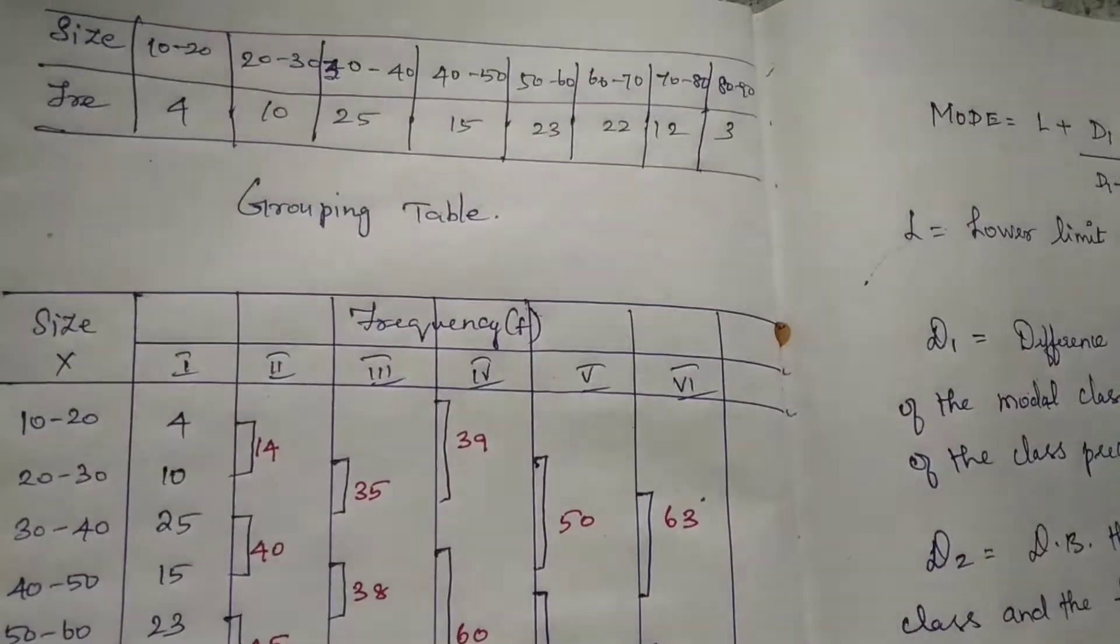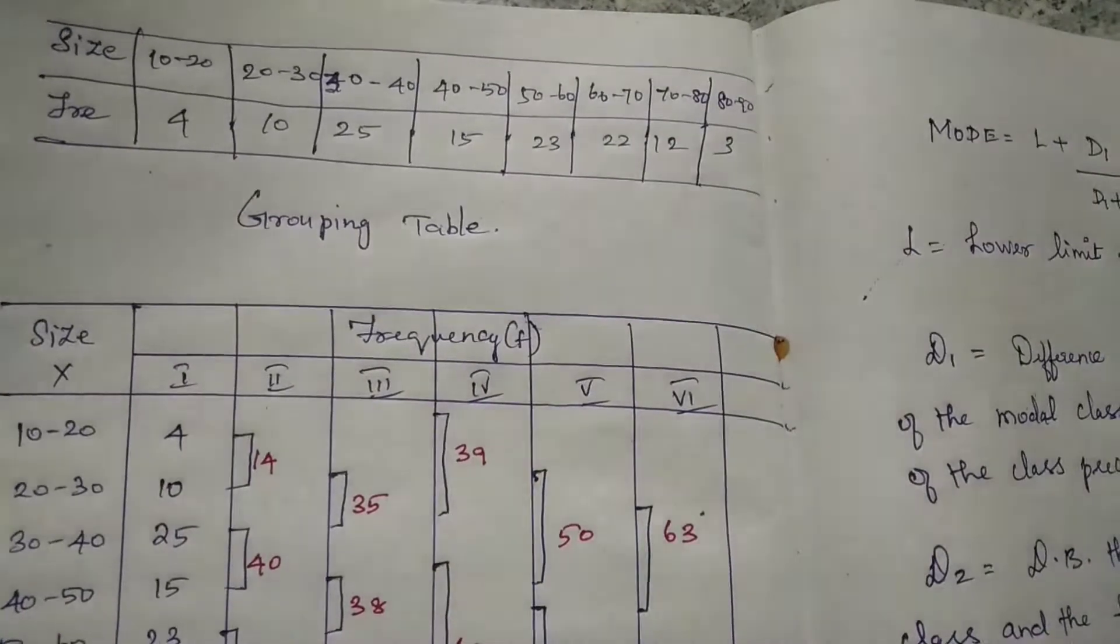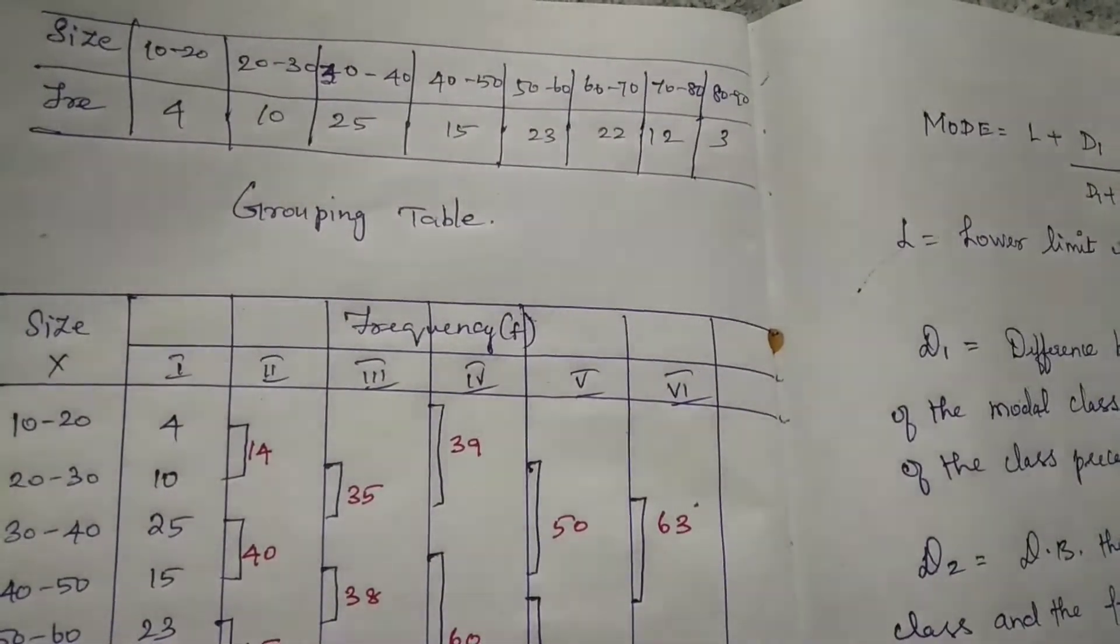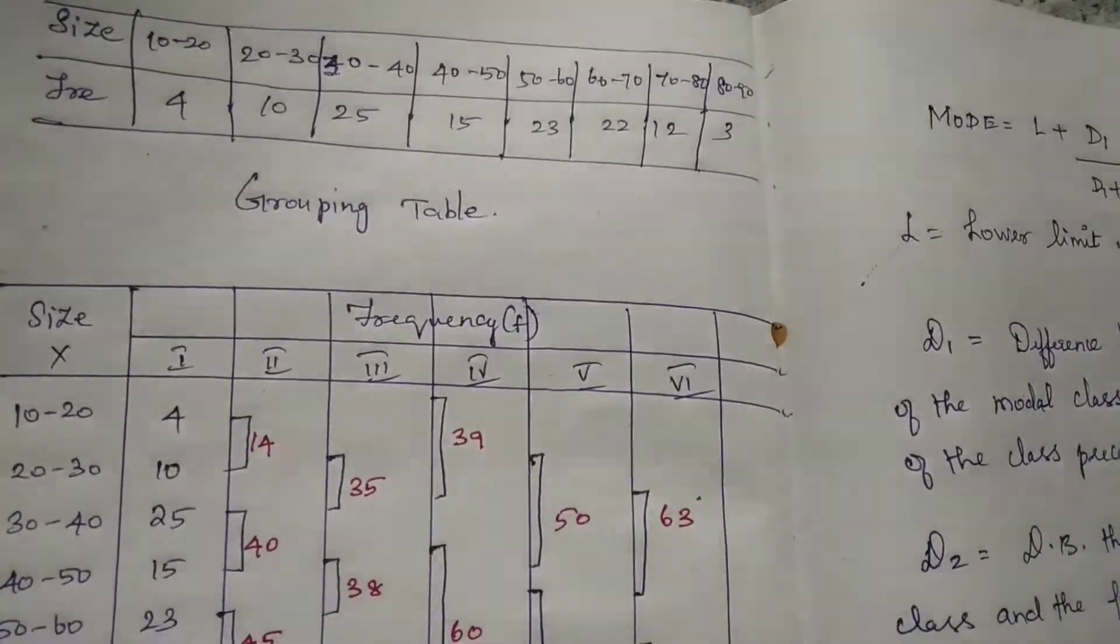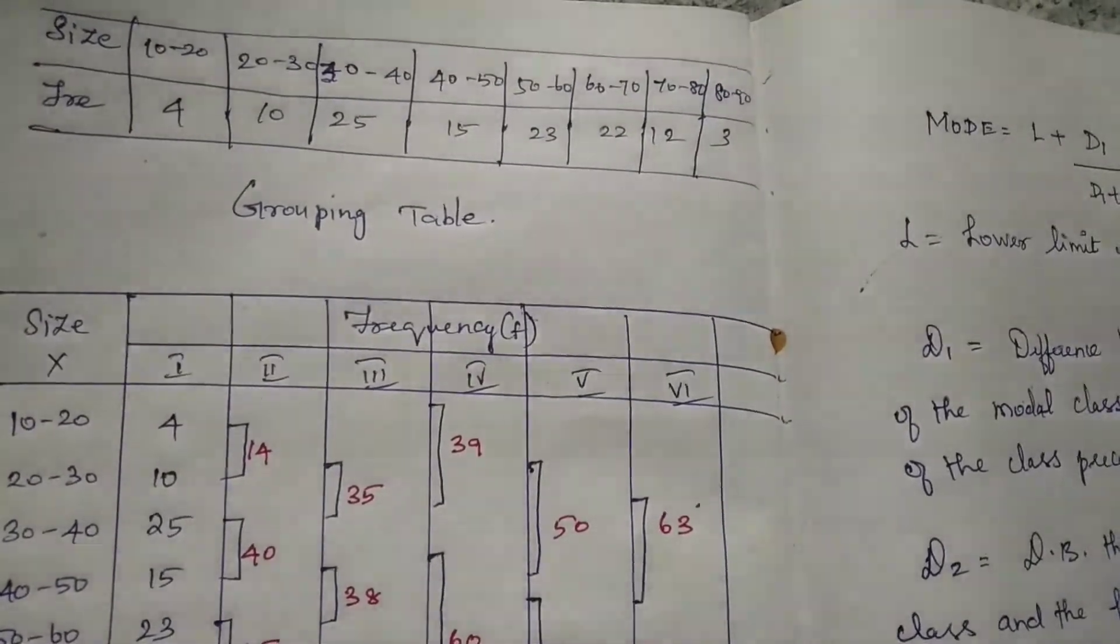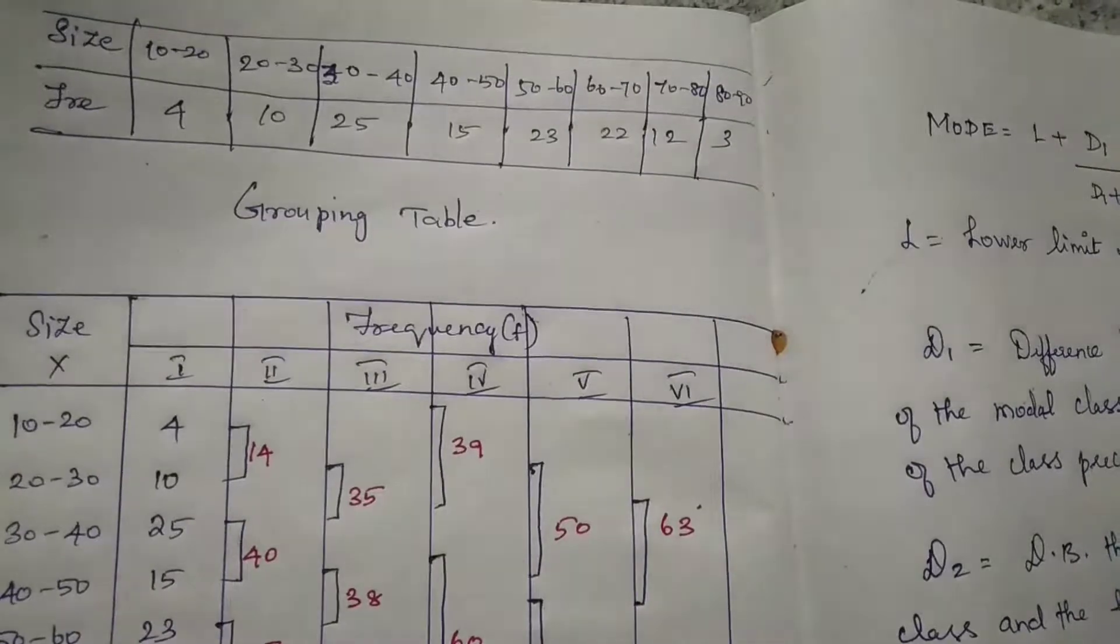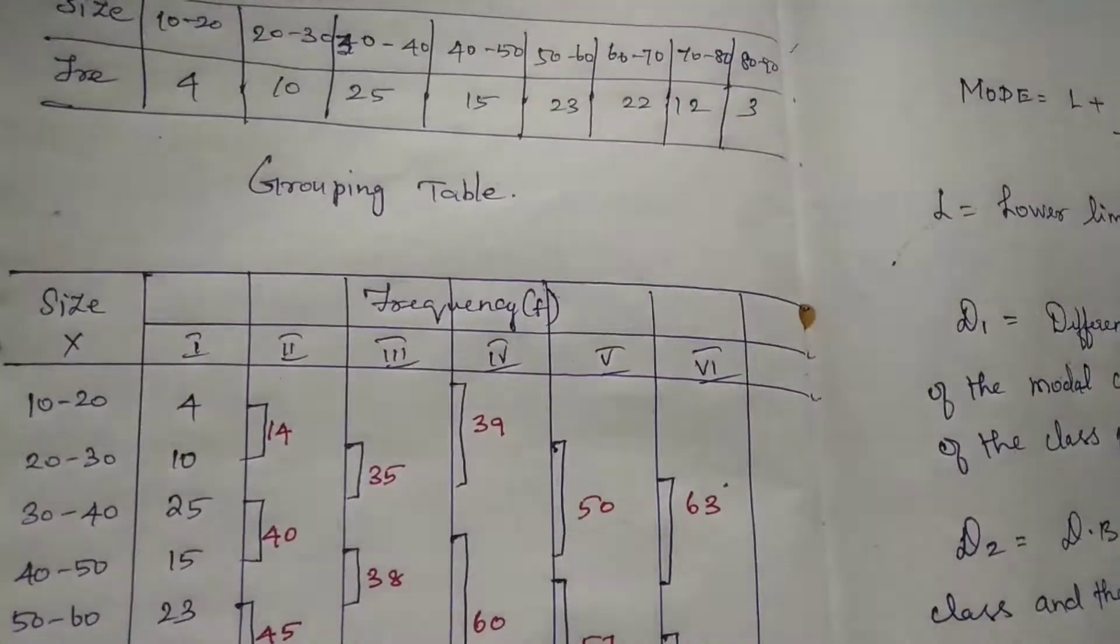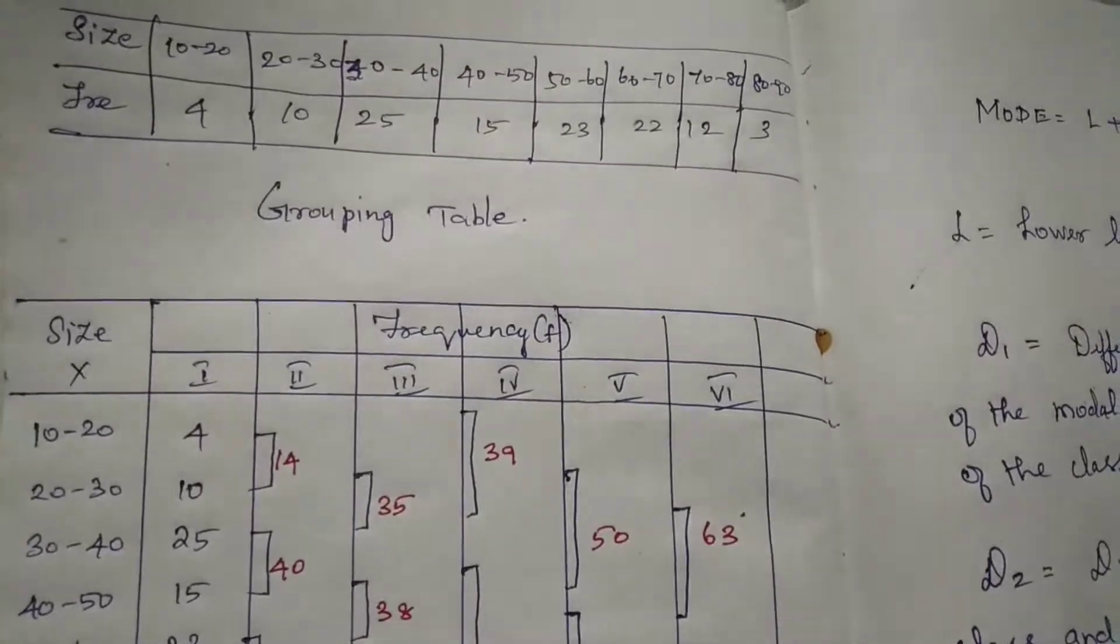See the size: 10 to 20, 20 to 30, 30 to 40, 40 to 50, 50 to 60, 60 to 70, 70 to 80, and 80 to 90. And the frequency values are 4, 10, 25, 15, 23, 22, 12, and 3.